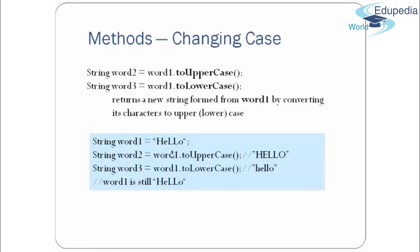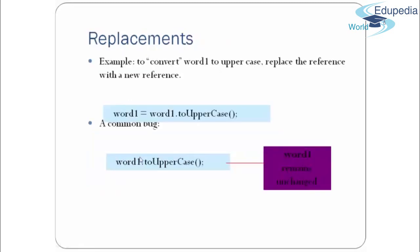We can also use toUpperCase() and toLowerCase() to change the case of a string. Since strings are immutable, calling word1.toUpperCase() leaves word1 unaffected — the new value is assigned to word2. To actually update word1, you must reassign: word1 = word1.toUpperCase(). Without reassignment, word1's value will not change.